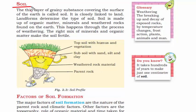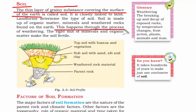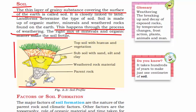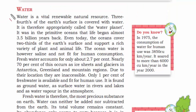Soil is the thin layer of grainy substance covering the surface of the earth — the grainy substance refers to small debris of rock. Soils are formed through the process known as weathering. For fertile soil, there should be a right mixture of minerals and organic matter. Looking at the soil profile: on top is grass or crops, beneath that is a small layer containing humus — dead and decayed matter of plants and animals — then subsoil with sand, silt and clay, then weathered rock material, and at the bottom the parent rock.